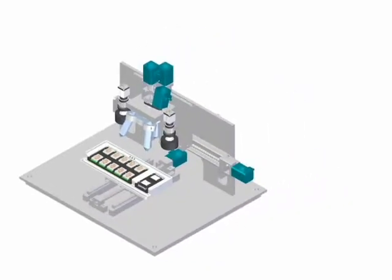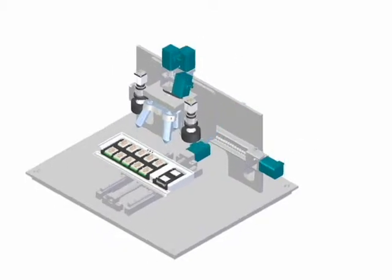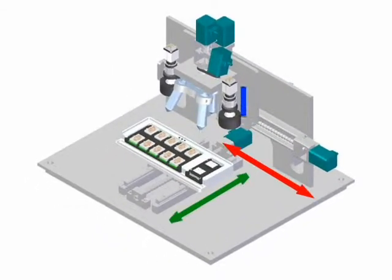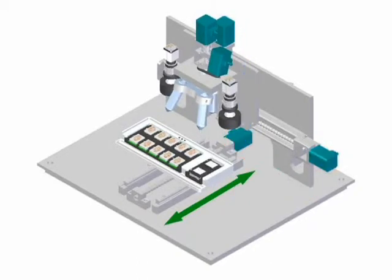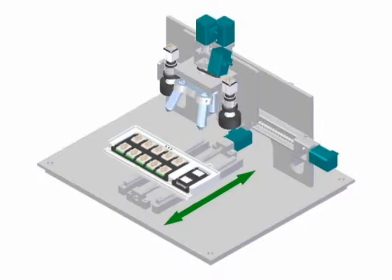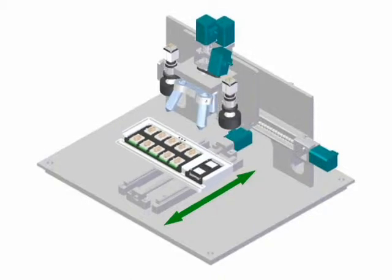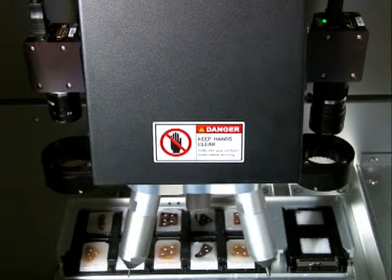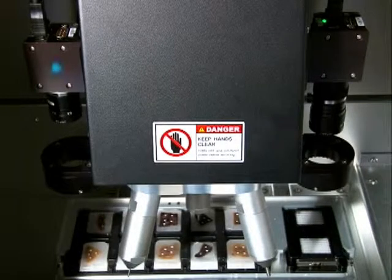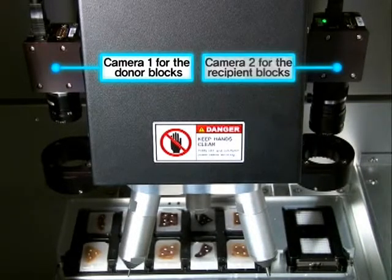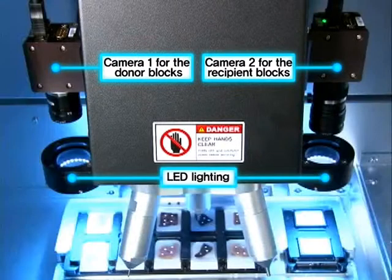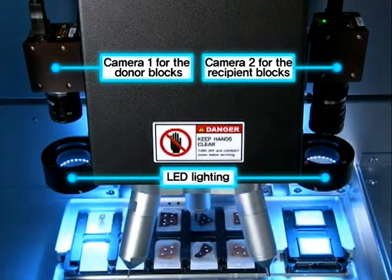The instrument part is composed of five axes. To easily move the puncher module in a 3D space, three axes are needed. With the main plate on the Y axis, the donor block and recipient block trays can be unloaded, and this structure is also applied when the puncher module is used. On the left and right sides of the puncher module are the cameras for the donor blocks and the recipient blocks. Under the cameras, LED lighting is built in to allow the cameras to recognize the targets correctly.